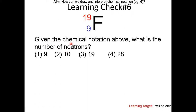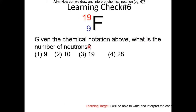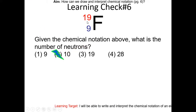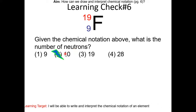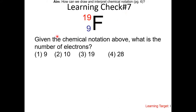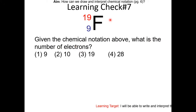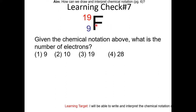Learning check number 6: given the chemical notation above, what is the number of neutrons? Try this yourself — pause the video and resume once you have the answer. Learning check number 7: what is the number of electrons? Since we're given the atom, we assume it is neutral unless stated otherwise. Since it has 9 protons, it must have 9 electrons. So choice 1.